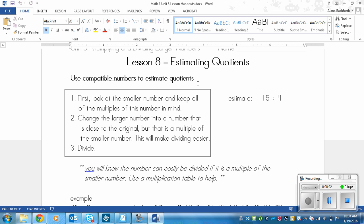Unless you know your multiplication table really well. So first, what you need to do is look at the smaller number and keep all of the multiples of this number in mind. So here's our example. We've got 4 and 15. So 4 is the smaller number. So we're thinking of the multiples of 4. And so that's like 4, 8, 12, 16, 20, 24, and so on. We won't need more than that.